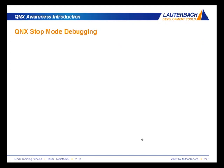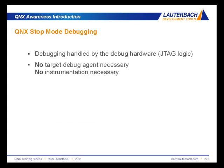First, QNX stop mode debugging. It's debugging that is handled completely by the debug hardware, which means it runs through the JTAG logic. There is no target debug agent necessary — no additional software inside the target is necessary to do stop mode debugging. No instrumentation is actually necessary. I will use the instrumented QNX kernel in my presentations later, but that has other reasons — it's not necessary for stop mode debugging.